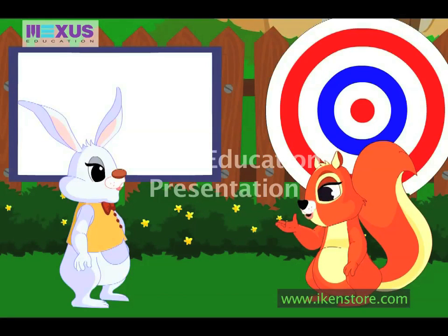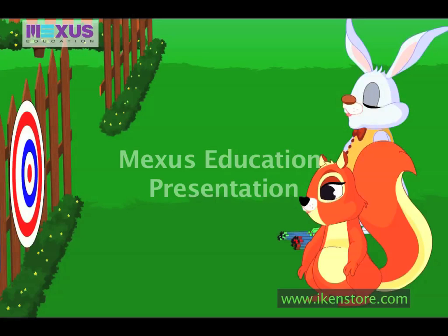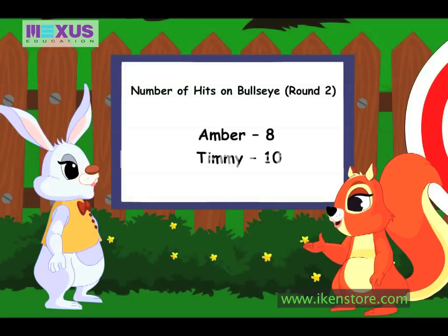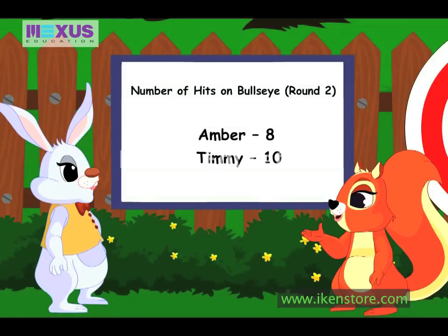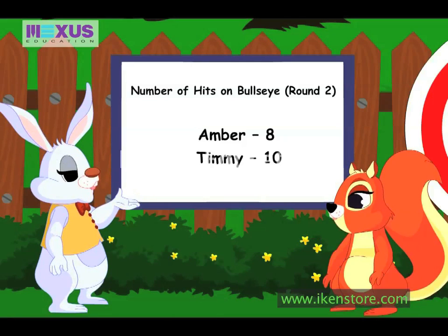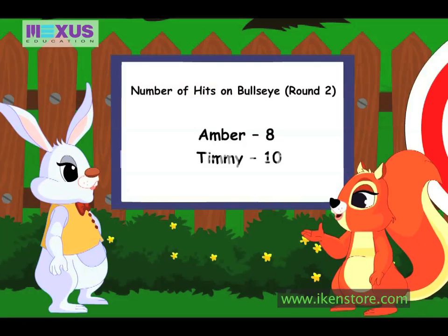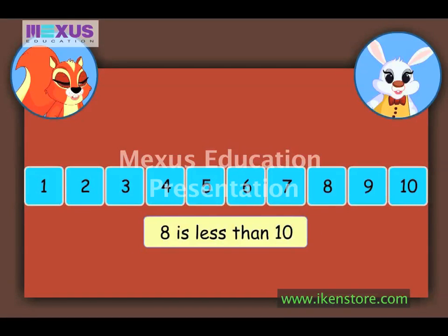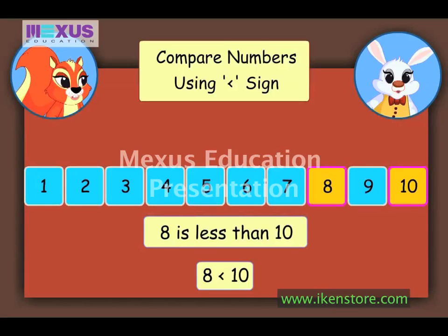Let's play two more rounds, Timmy. Okay. Let's see the scores now. This time, I could hit the bull's eye eight times. And I could hit the bull's eye ten times. Wow! Timmy, you win this time. You have scored more than me. Yes, you are right, Amber. Here, ten is greater than eight. There is another way of saying this. As we can see, eight comes first, then comes the number ten. So, eight is less than ten. We use the less than symbol to write the number statement.